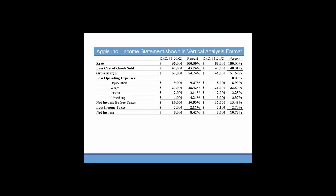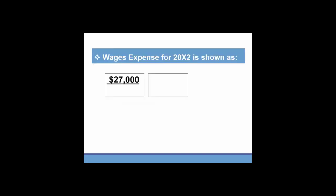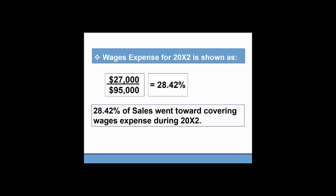It's interesting to note that wages were only 23.6% of sales in the prior year. So again, you can make comparisons to a prior year, even though your calculation is made within a given year. So again, interpretation on that wages expense, $27,000 of wages over $95,000 of sales, you get 28.42%. This means that 28.42% of sales went toward covering wages expense during the year.